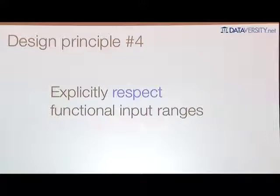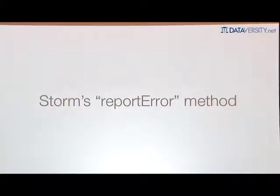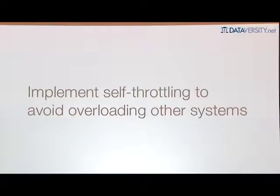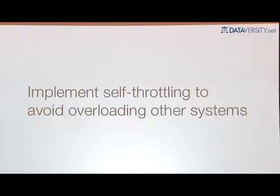The next design principle is explicitly respecting the functional input ranges of your components. Coming back to the report error method: the problem was a user could abuse it by calling it too often, overloading ZooKeeper and bringing down the cluster. The solution was to have the method throttle itself — any errors reported over the throttle rate are logged locally but not written to ZooKeeper. This causes report error to work for a greater portion of the input space. You see a similar pattern with log files, which must automatically trim themselves to avoid running out of disk space. The more general principle is using self-throttling to respect the functional input ranges of components and prevent cascading failures — because the only thing worse than something failing is something failing because something completely unrelated is wrong.